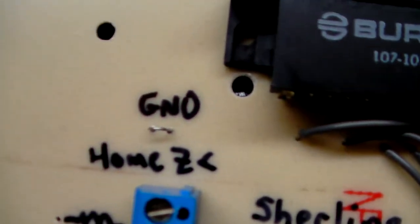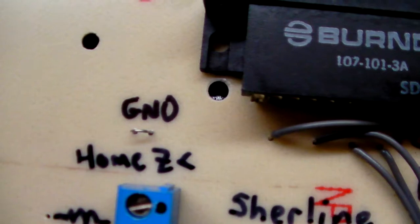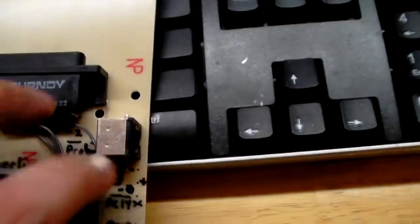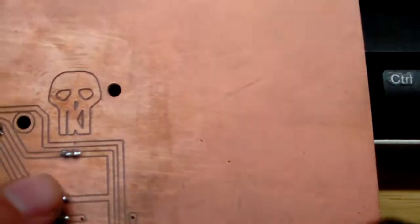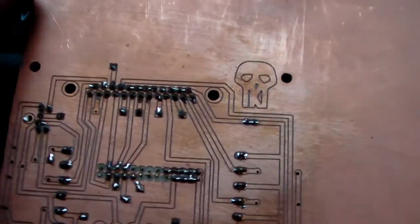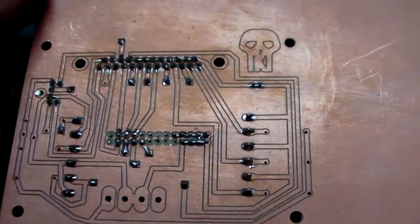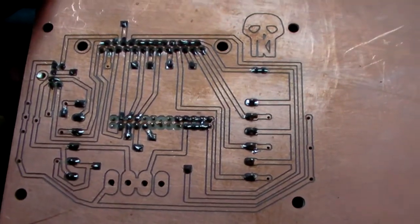One thing I wanted to point out is that for testing I've got a little loop of ground wire that is just connected here. That'll make it easy to hook up and clip your multimeter probe there.